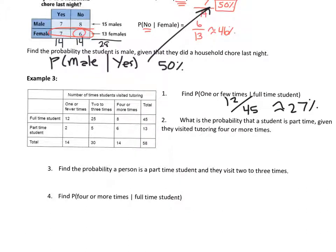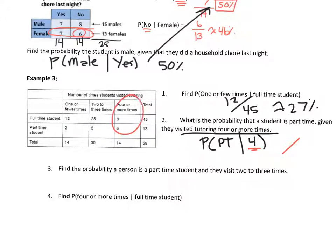Question two: what is the probability a student is part-time given they visited tutoring four or more times? The denominator is four-or-more visits, which is 14. Of those 14, how many were part-time? Six. So six divided by 14 is about 43%.